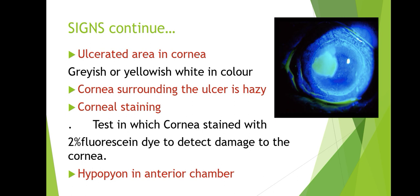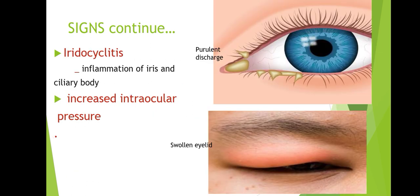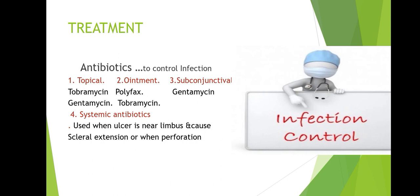Cornea surrounding the ulcer is hazy due to edema and infiltration by inflammatory cells. Corneal staining is a test in which the cornea is stained with fluorescent dye to detect damage. Hypopyon in the anterior chamber. Iridocyclitis — inflammation of iris and ciliary body — due to toxins and inflammatory cytokines released from the ulcerated area. Increased intraocular pressure.